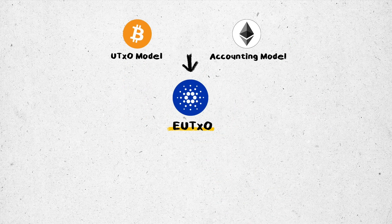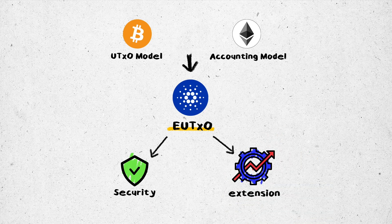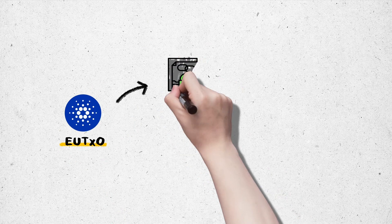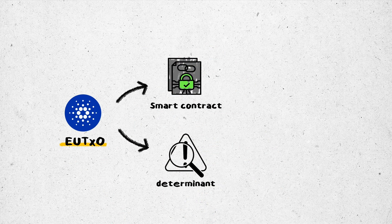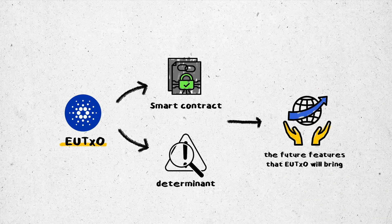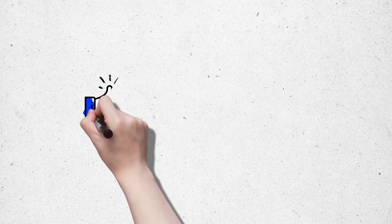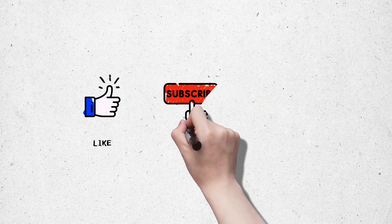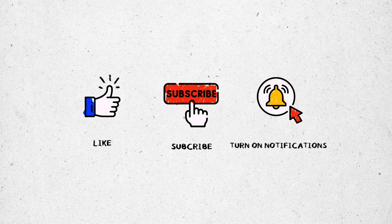In summary, the EUTXO ledger model of Cardano contains security capability and is more advanced than the previous ledger models — UTXO and accounting. Apart from providing the ability to predict smart contract costs before they are deployed, EUTXO also has the ability to execute transactions in parallel within the system. What do you think about the EUTXO ledger model and the future features it will bring? If you are interested, please like and subscribe and click the bell to catch up with the latest videos.